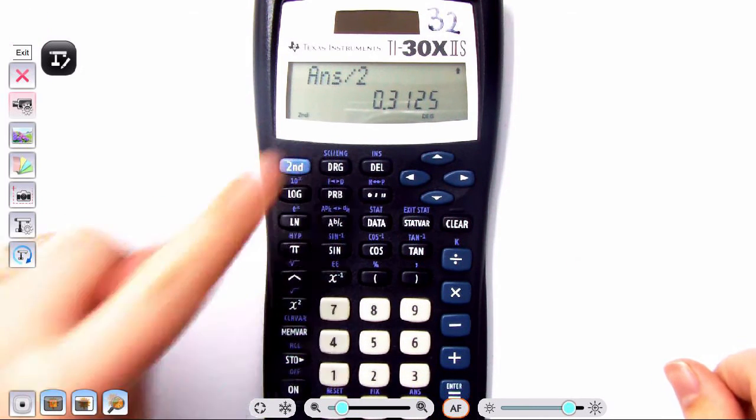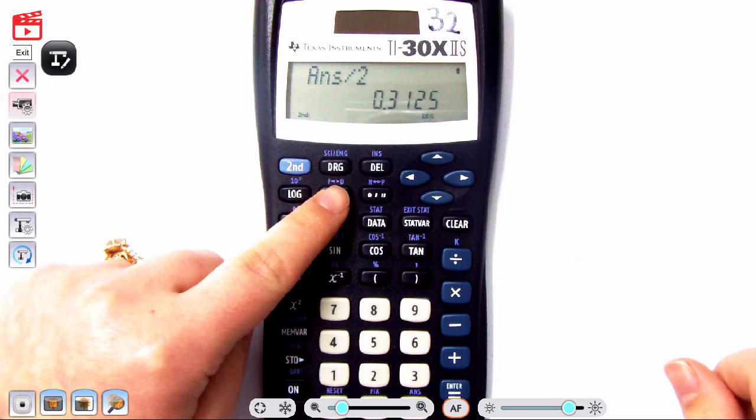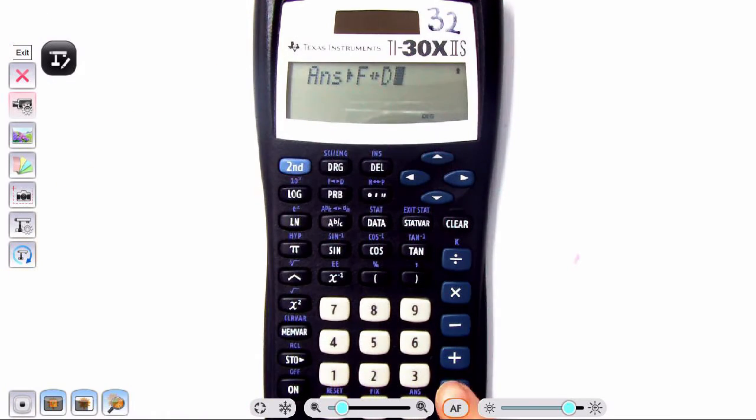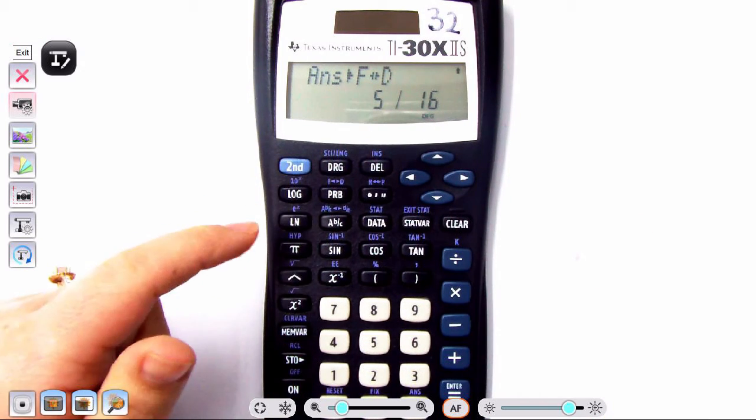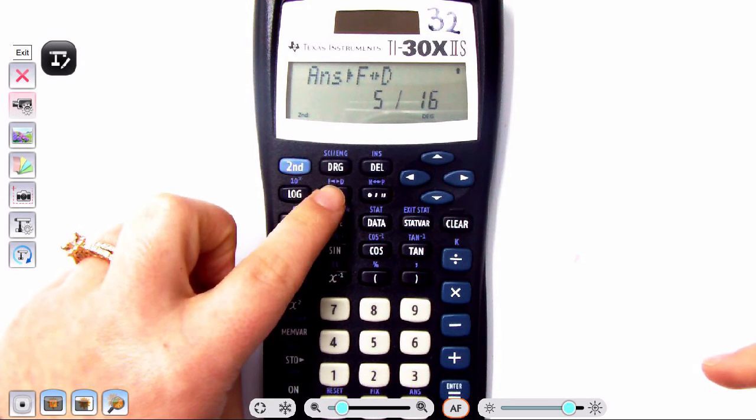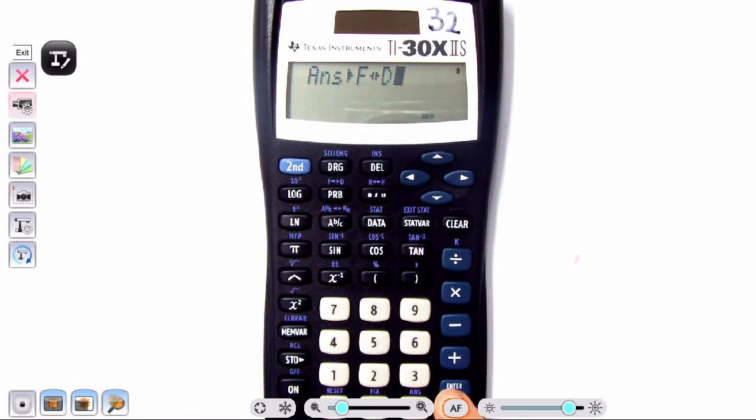So if you press second and I press this button right here, I get f going to d, I press enter, and that's going to give you your fraction. Now let's go ahead and convert that back to a decimal. So I'm going to press—I have a fraction, I want a decimal—so I'm going to press second, I'm going to press this one f going to d, I'm going to press that again, and that's going to convert back to a decimal.